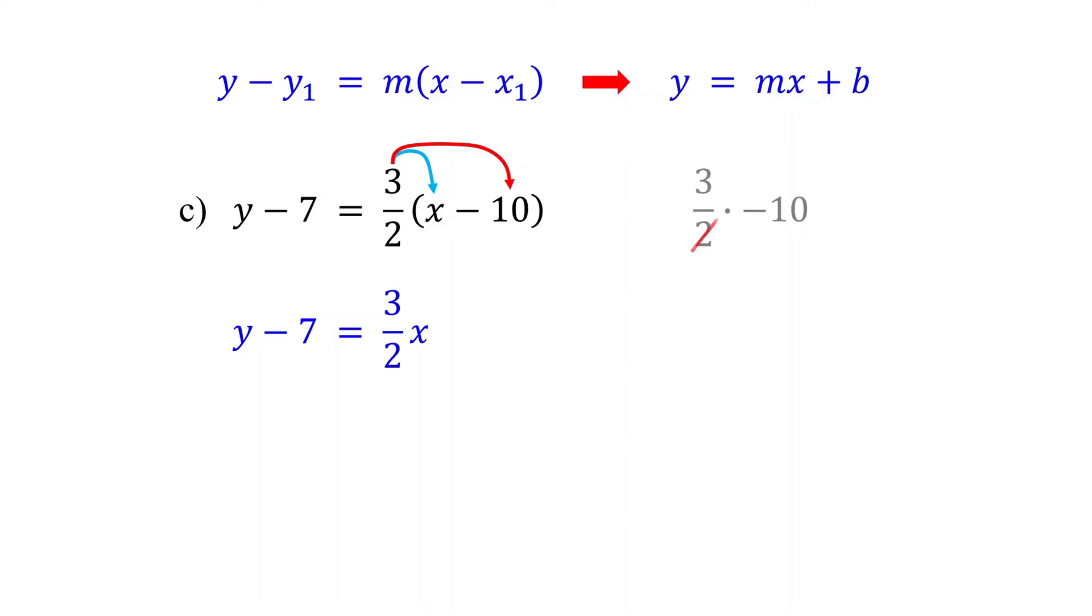Negative 10 divided by 2 is negative 5, and 3 times negative 5 is negative 15. Then, isolate Y by adding 7 to both sides. Negative 15 plus 7 is negative 8.